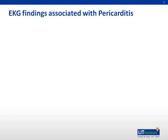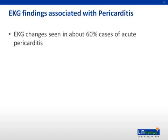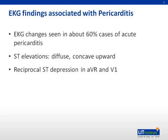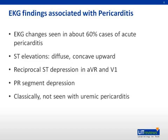There are some classic EKG findings associated with pericarditis, seen in about 60% of cases. When present, you will see diffuse, concave upward ST elevations — diffuse meaning you can see ST elevations in essentially any lead, with the possible exceptions of AVR and sometimes V1, where you actually see reciprocal ST depressions instead. A less sensitive but highly specific EKG sign is diffuse PR segment depression, with corresponding PR segment elevation in AVR. As a side note, typically you will not see these EKG changes in the setting of uremic pericarditis.